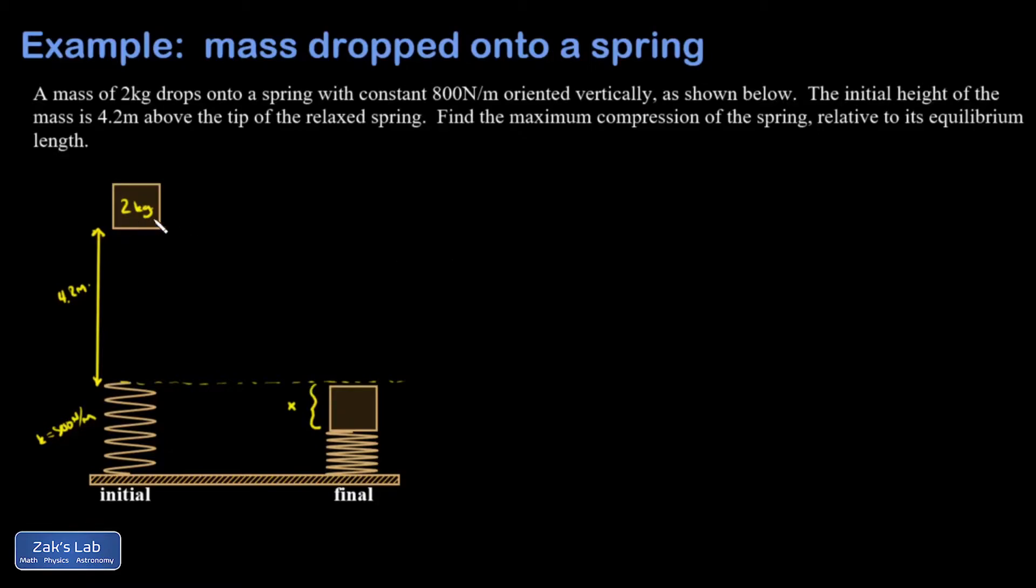The most common mistake here would be to look at the potential energy gravitational for the 2 kilogram mass and say that it was mgy, where y is equal to 4.2.